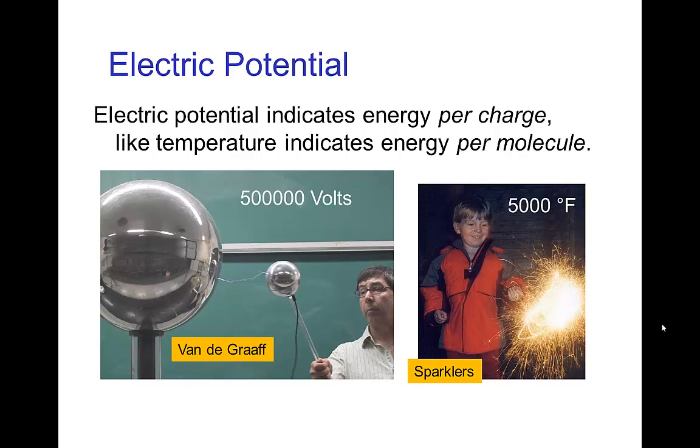As I mentioned, the Van de Graaff we're using there can reach half a million volts. And while that may seem dangerous, it's not really because electric potential doesn't indicate the total amount of energy. It indicates the amount of energy per charge. And so, there isn't a very large amount of total charge that is on the Van de Graaff. Much like temperature indicates energy per molecule, electric potential indicates the energy per charge.